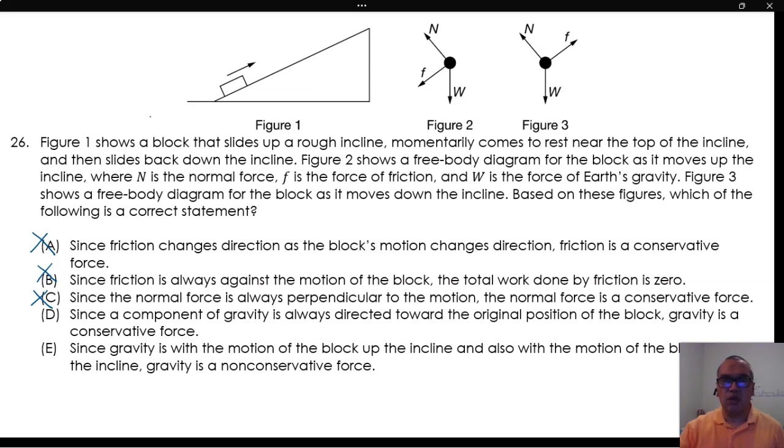This means that the work done by gravity on the way up is negative, and the work done by gravity on the way down is positive, which means that the total work done by gravity is zero over a closed path. This is a good option for a conservative force.